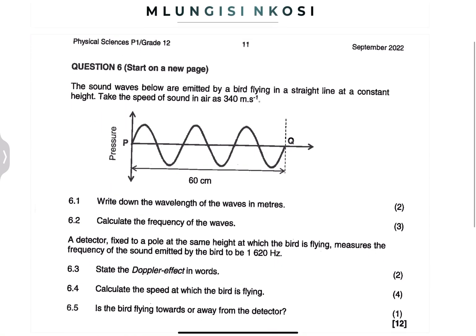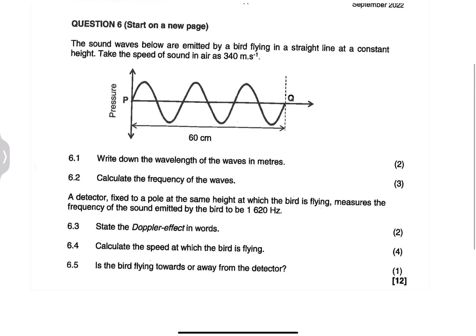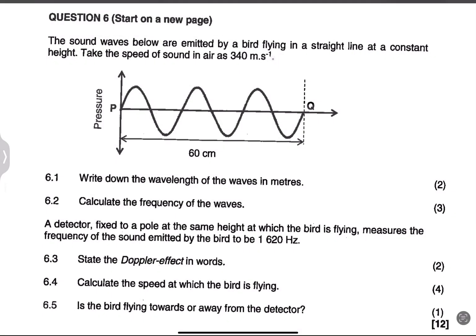We're looking at the Doppler effect. In this case, we are given that the sound waves below are emitted by a bird that is flying in a straight line at a constant height. The first question asks us to write down the wavelength of the waves in meters. Now look at this, they gave you 60 centimeters there. But in this case, what are we supposed to have? Remember that wavelength you can measure from crest to crest or from two points that are exactly similar. So in this case, how many waves do we have?